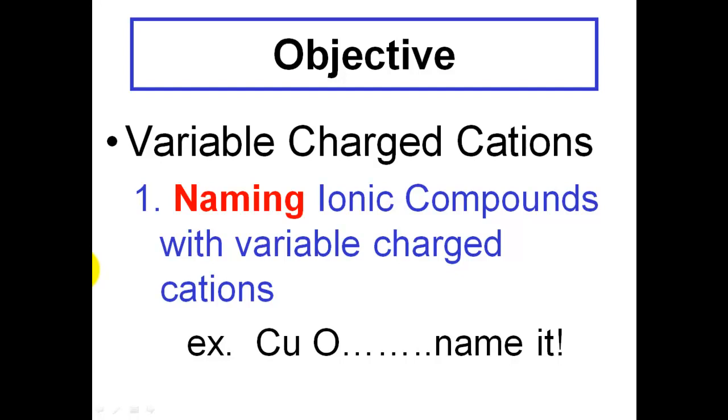And we give those ions the name of variable charge cations. A good example of how we name something is going to be a little different. In the past we looked at, just a quick intro here, this would be called copper oxide and I'm just letting you know today we're going to change how we name these when I deal with cations that have more than one charge.